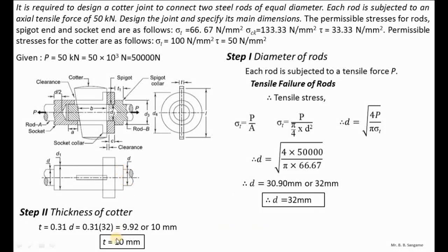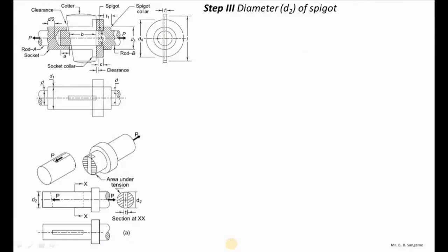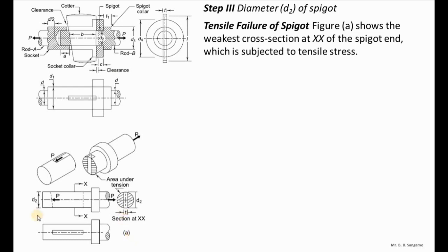Now we calculate the diameter d2 of the spigot. The spigot fits inside the socket and these two parts are connected by the cotter. After the application of tensile force, there is a possibility of failure of the spigot in tension at section XX — the section where the cotter passes through.